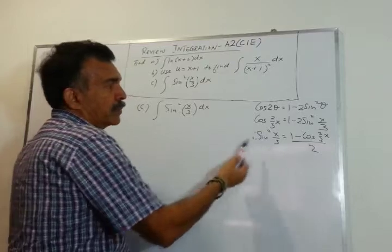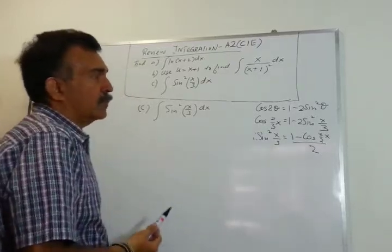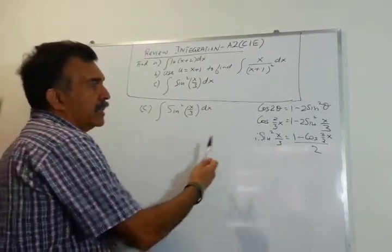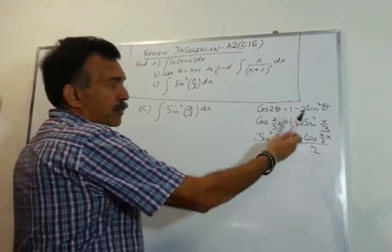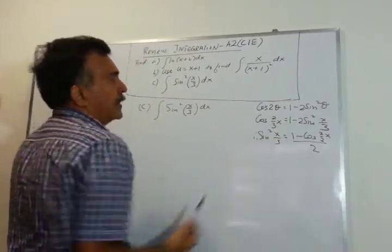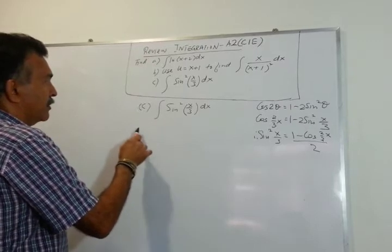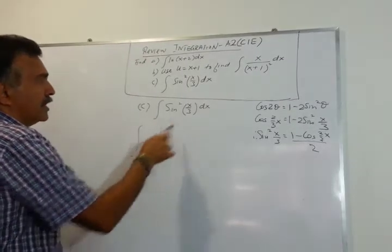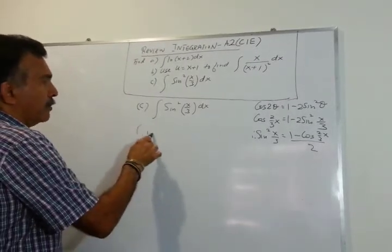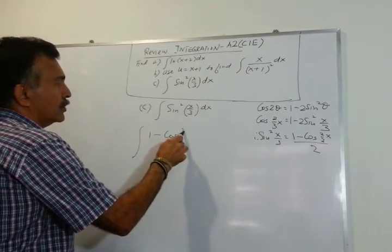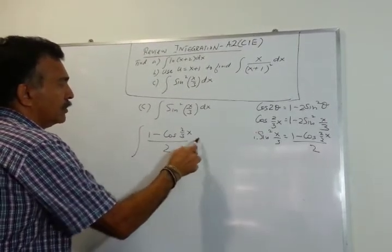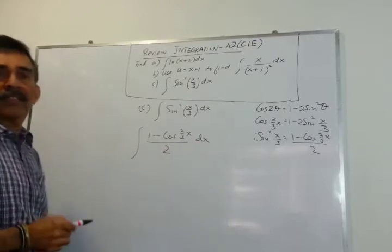Making sin²(x/3) the subject: bring it to the left-hand side to get sin²(x/3) equals (1 minus cos(2x/3)) all divided by 2. So our integral becomes the integral of (1 minus cos(2x/3)) over 2, dx.